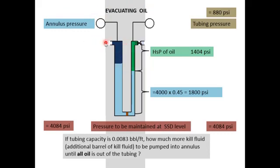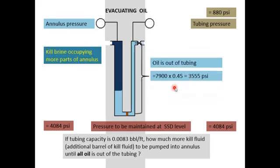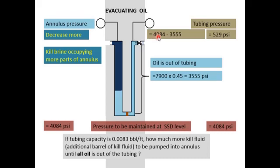We come to the second stage: evacuating the oil. Continuing to pump, more kill brine enters the annulus and the original completion brine continues to fill up the tubing, pushing oil out of the well. At the end, inside the tubing we only have completion brine. The hydrostatic pressure of the completion brine over 7,900 ft is: 7,900 × 0.45 = 3,555 psi. Therefore the tubing head pressure becomes: 4,084 − 3,555 = 529 psi.